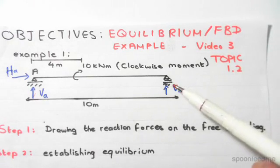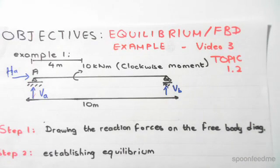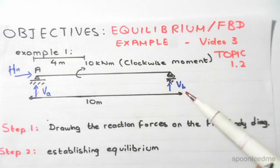Over here, in the previous video we established that a roller has a vertical restraint only, so a vertical reaction force. A roller can't move up and down since it's vertically restrained, but it can move left and right, so we only have one reaction force.